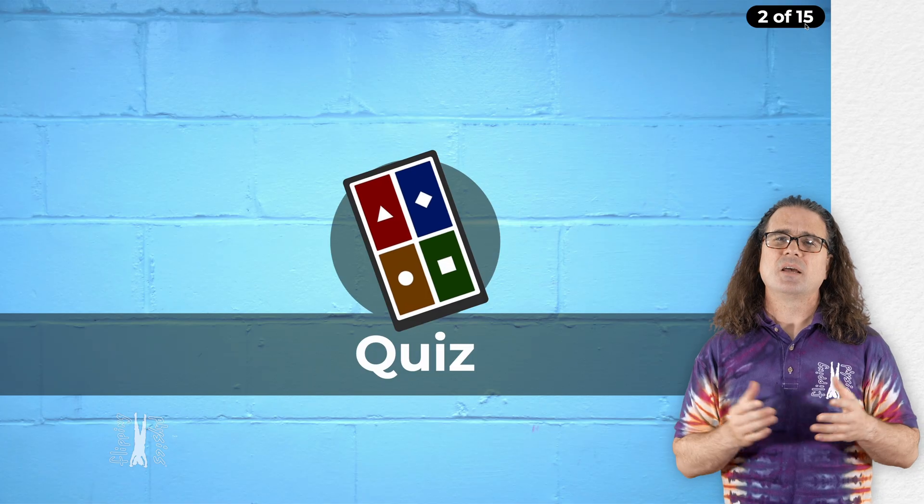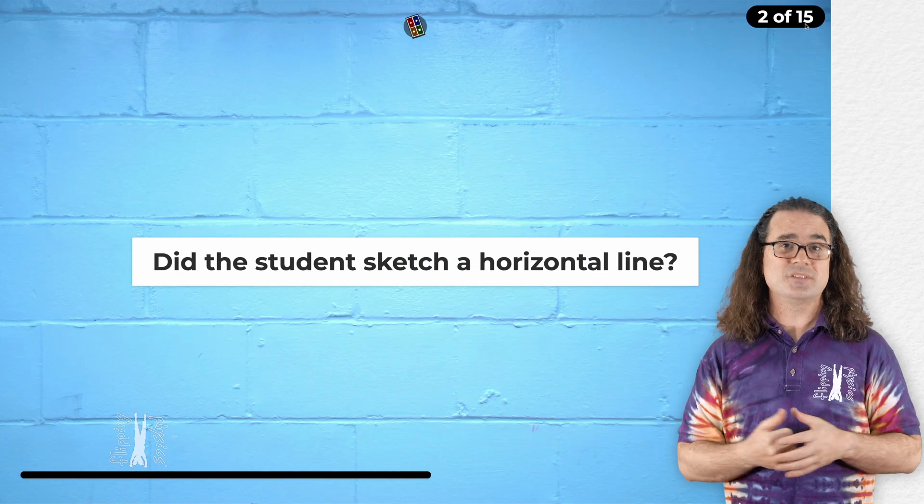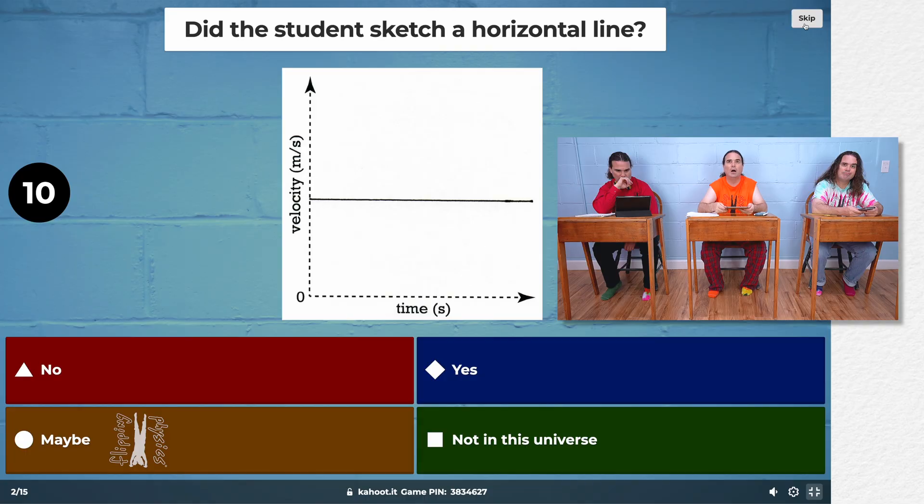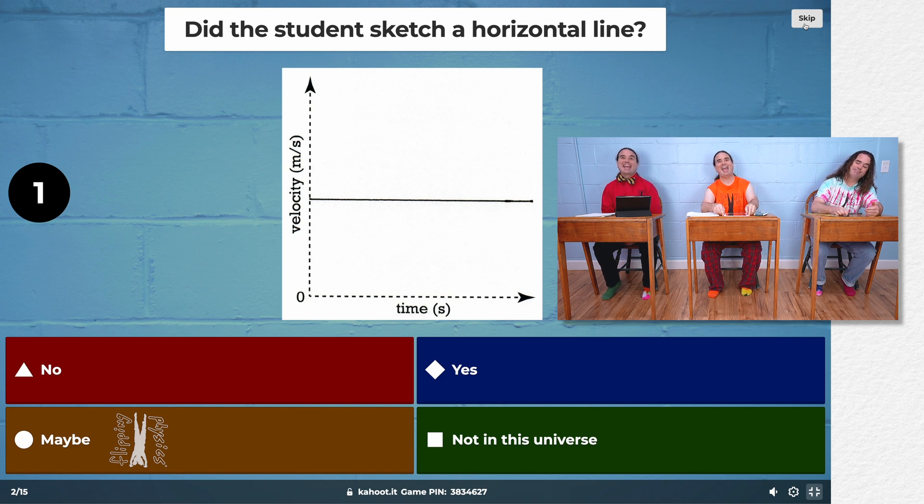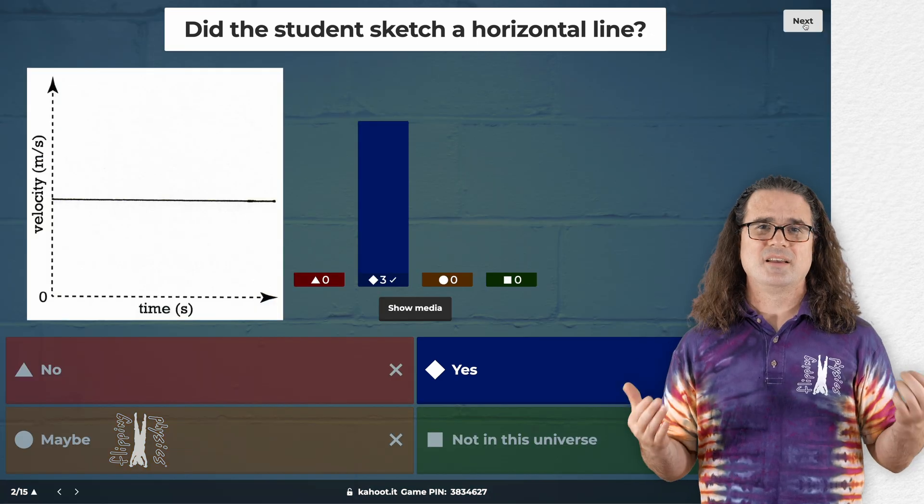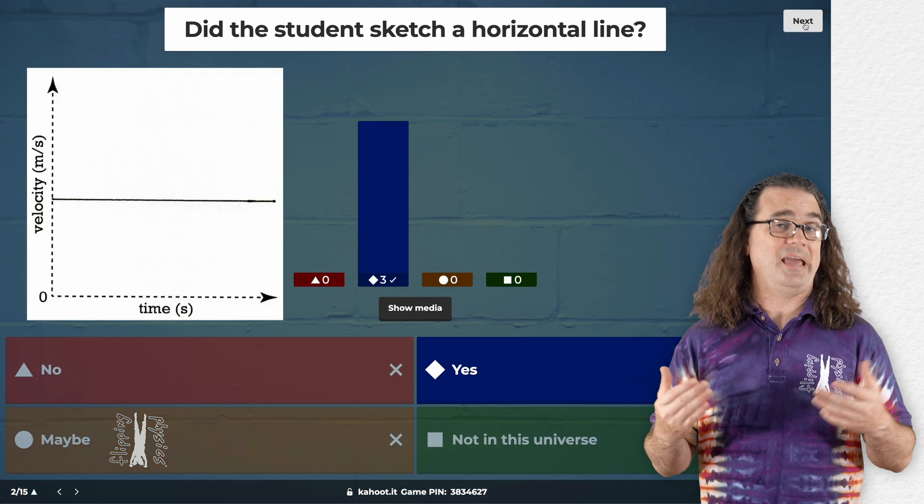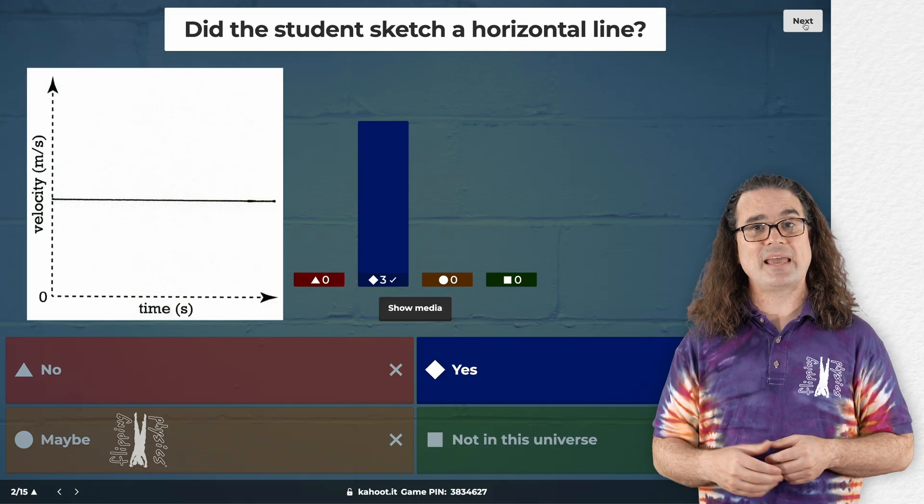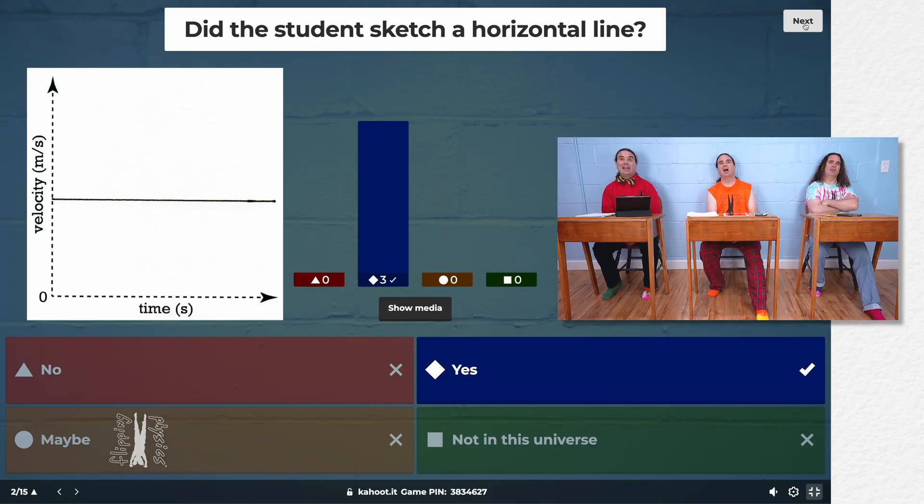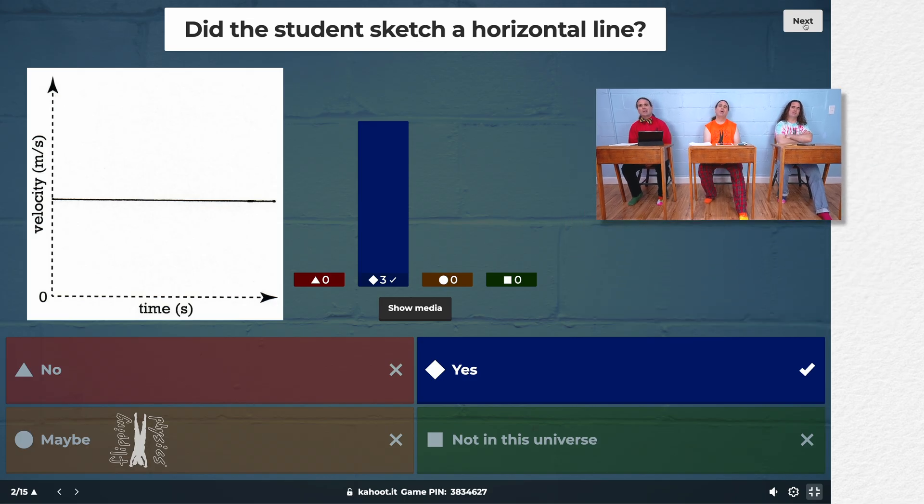Next question. Again, did the student sketch a horizontal line? Yeah. Yeah. Yeah. Correct. This student clearly brought and used a ruler with a straight edge to sketch this line. I thought you said these were not real student responses. Right. They are not. It is just easier to pretend that they are.